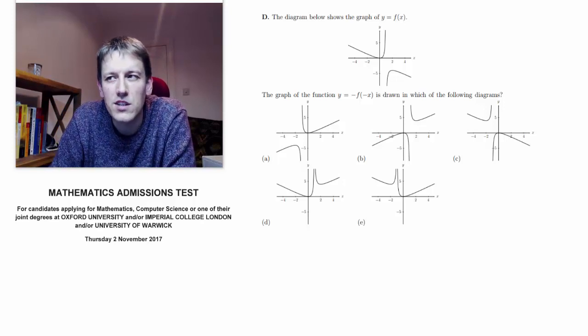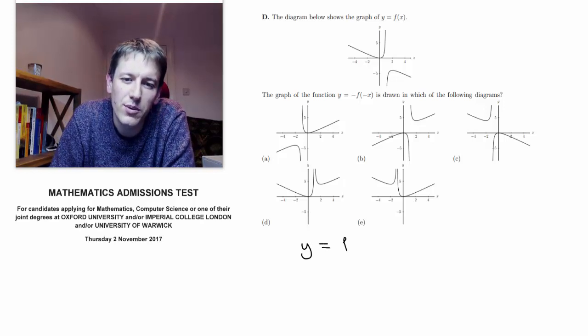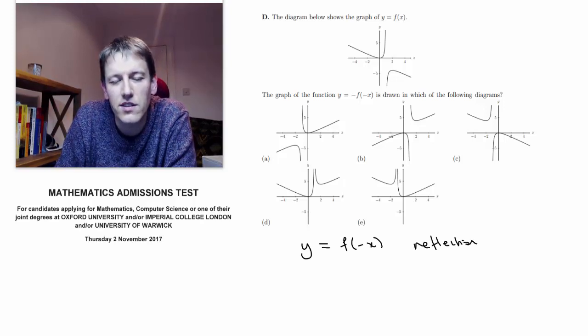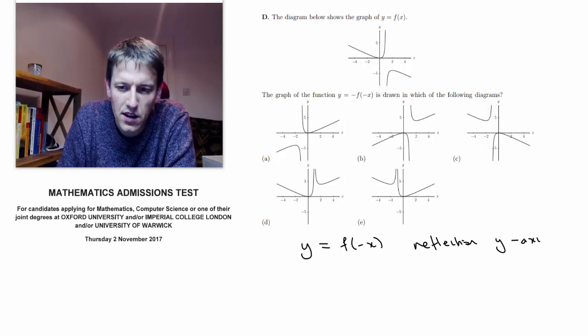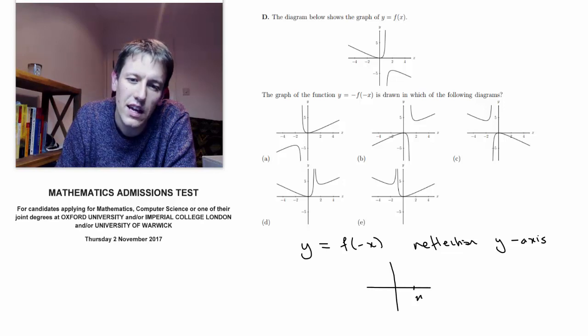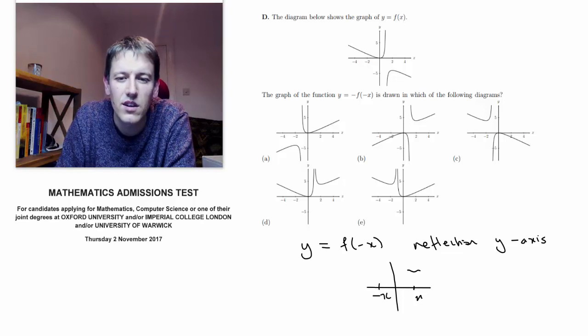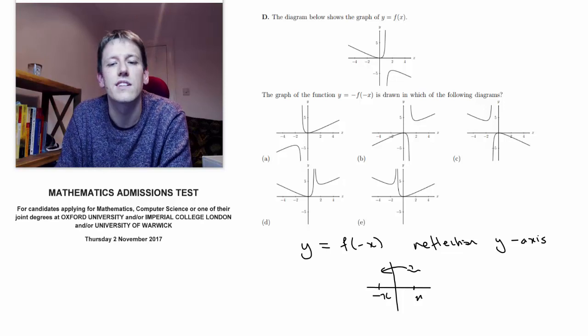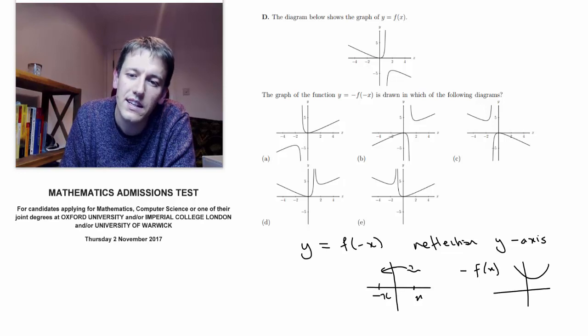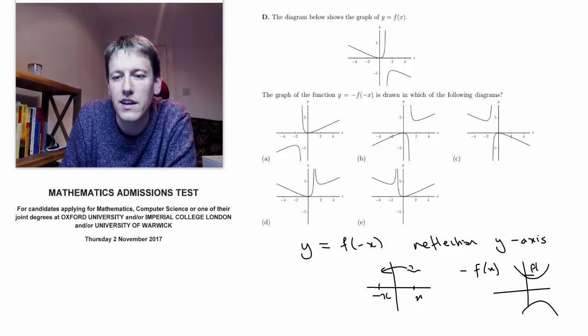Graph transformation is a topic some people find quite easy, some people really dislike, but let's think about what they do. If I have y equals f of minus x, that would give me a reflection in the y-axis, because whatever I had for f of x before now becomes f of minus x and vice versa. And if I did minus f of x, that's a reflection in the x-axis, so whatever the f of x was before becomes minus f of x.